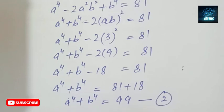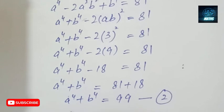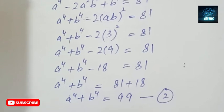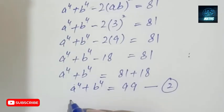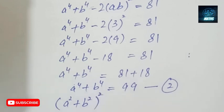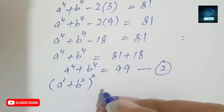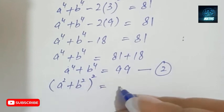Now from here I can find the value of a plus b. How? By taking (a² plus b²) squared. You all know the identity for opening this expression.